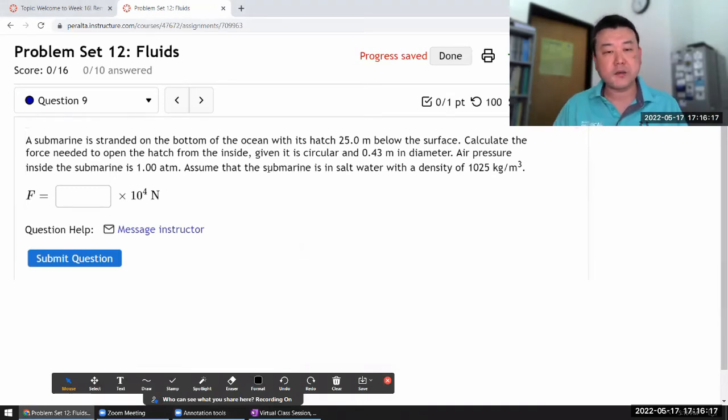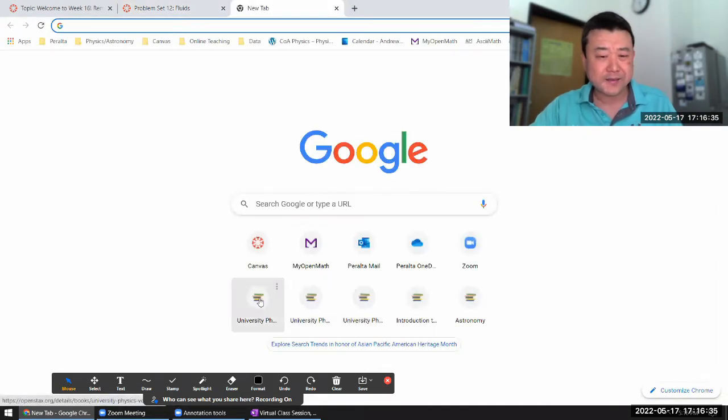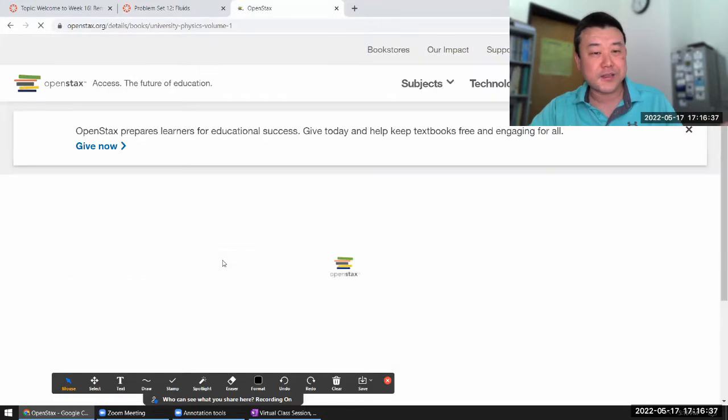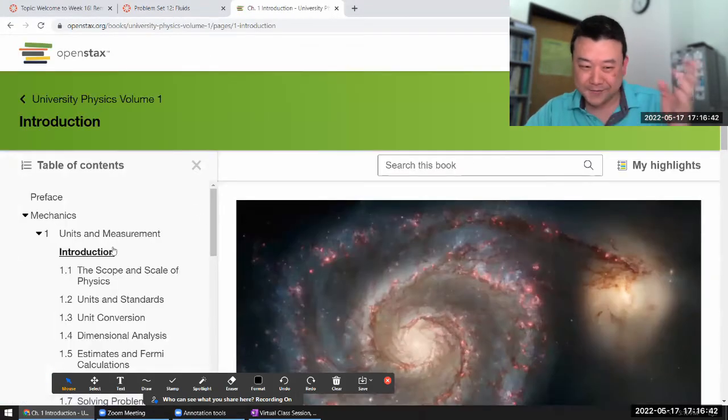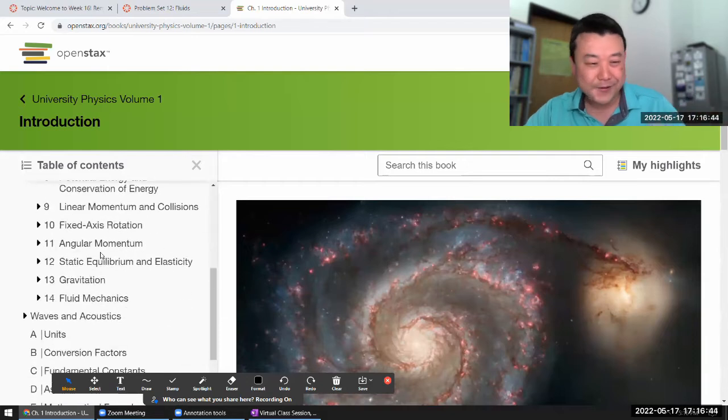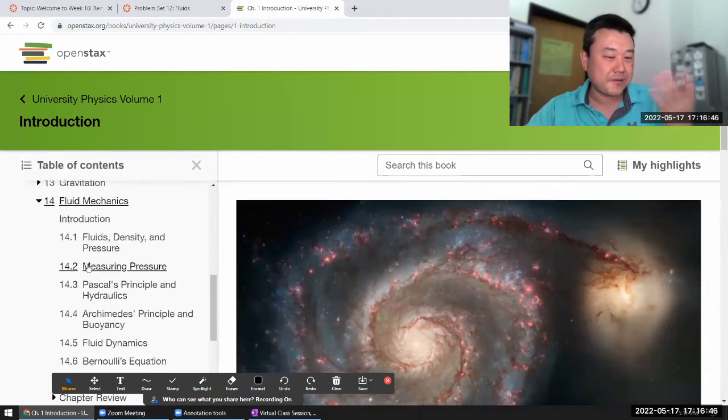So the question says, this is in the fluids chapter. Oh wow, it doesn't have hints. I must not have programmed in this question. Usually if it's a question that I programmed in, then there's always some kind of a hint, even if the only thing that the hint is saying is to tell you to look at this textbook section. So since that question doesn't have that hint, what I will tell you in this video is,